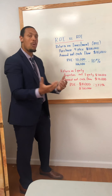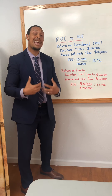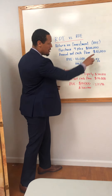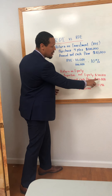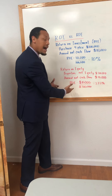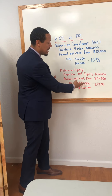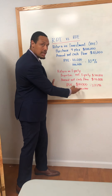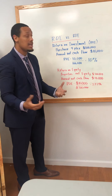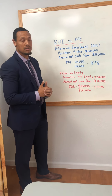So in order to calculate my return on equity, I'm going to take my annual cash flow, which is $10,000. I'm going to take that $10,000 and divide it by my equity — not my investment, but my equity. Return on equity: I take my $10,000, divide it by $300,000, and that's 3.33% — not as good as 10%.